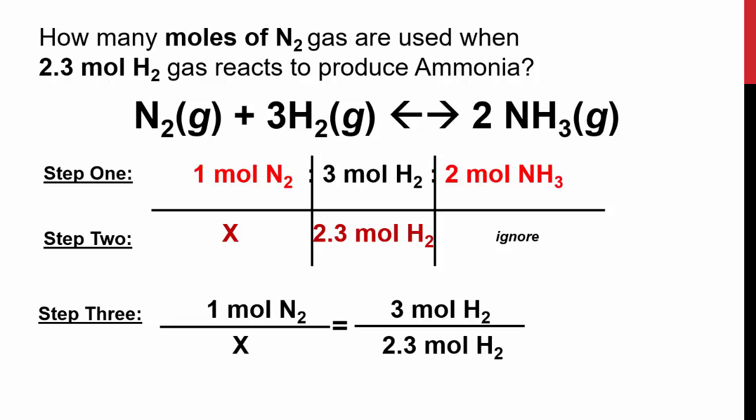Now, just looking at our givens, if you have 3 moles of hydrogen and only 2.3 moles from the problem, this means that our x should be less than 1 mole. So, when you cross, multiply, and solve, you get an x of 0.78 moles of nitrogen gas.